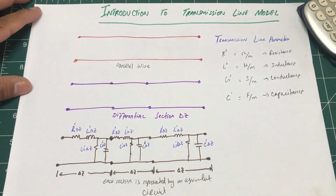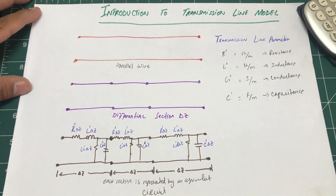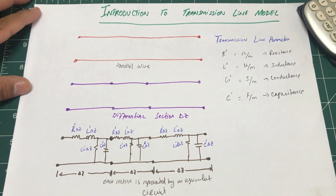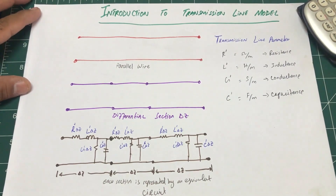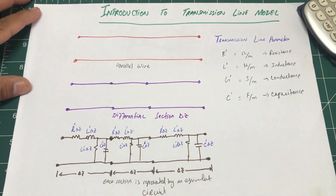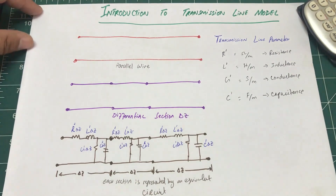Bismillahirrahmanirrahim. I recently completed a series on Fourier — about 17 different videos — so I'm starting a new series. We're going to develop a series on transmission line models, then continue with voltage coefficient derivation, Smith charts, and things like that. Basically a microwave tutorial, and the first lecture is going to be on introduction to transmission lines.